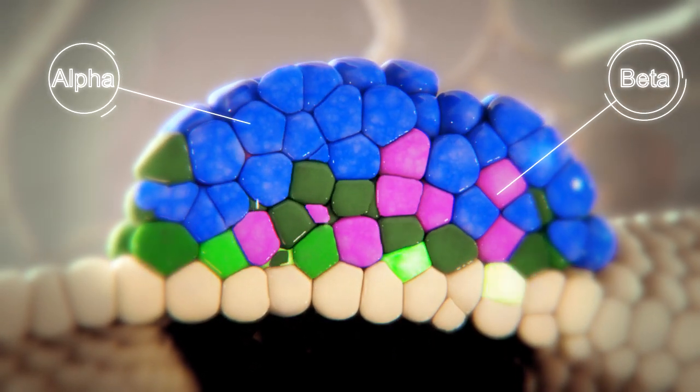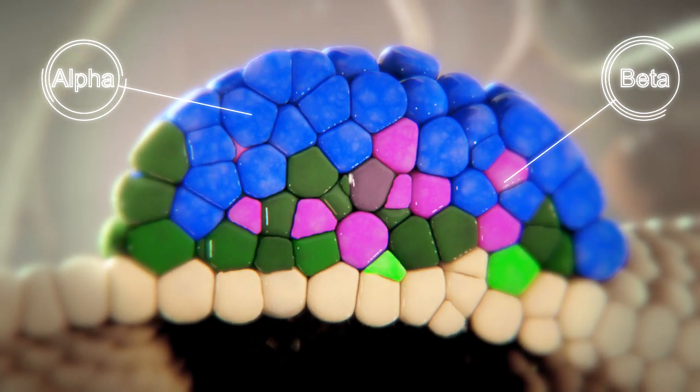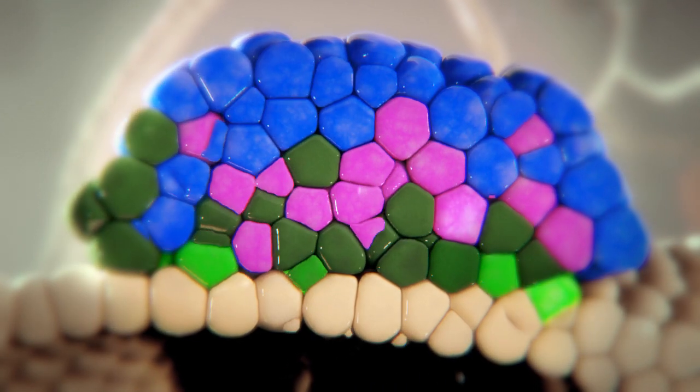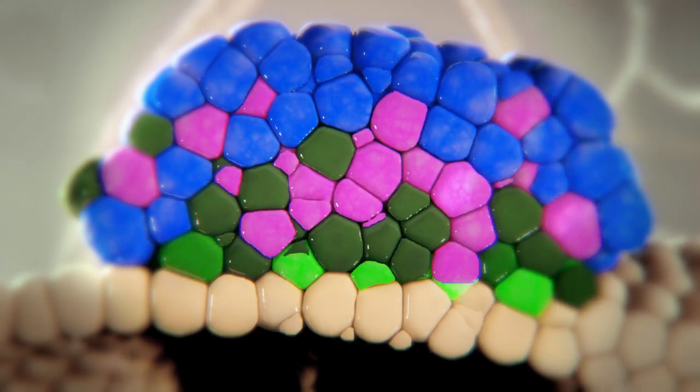About a day later, insulin-producing cells start to appear in increasing numbers. Because these beta cells originate from later progenitors, they are closer to the peninsula base.